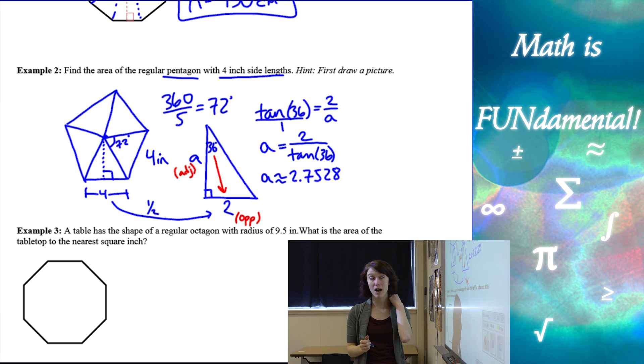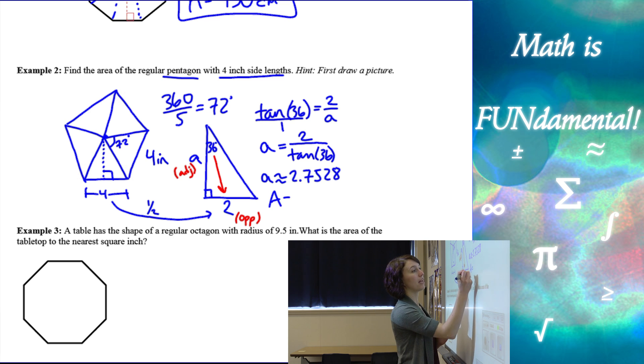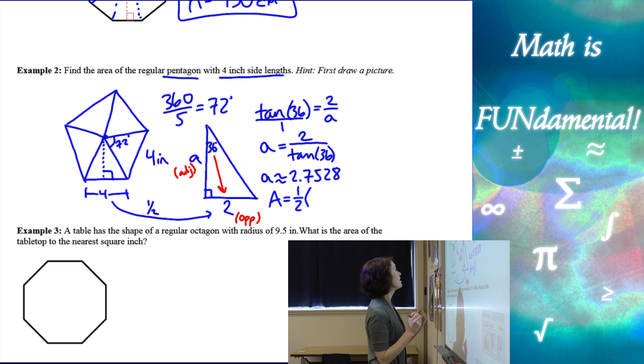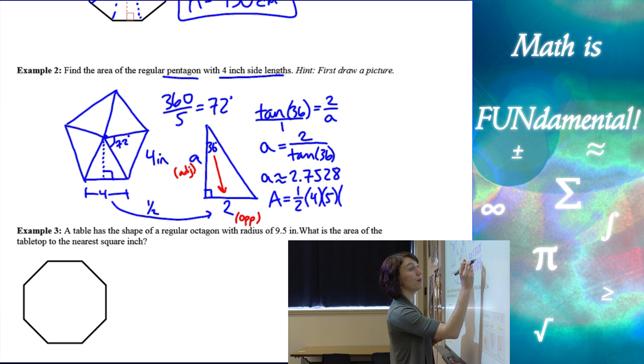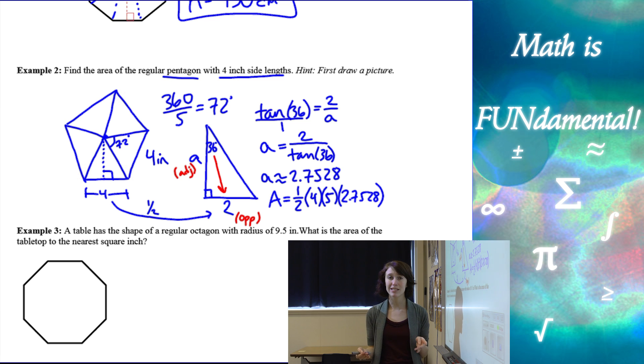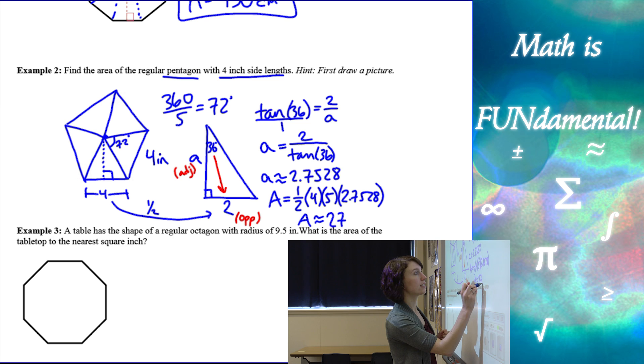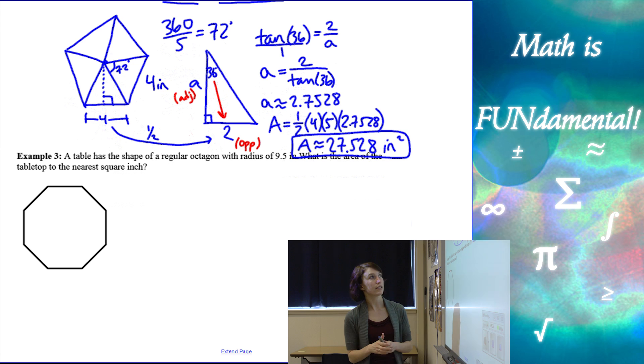Alright, so now I have my apothem. I have my side length. I can find my area. 1 half times the side length times the number of sides, so that's going to give me my perimeter all the way around, times the apothem, 2.7528. I use four decimals just so I don't end up with a rounding error. Four decimals is usually a pretty safe number. Alright, and then it doesn't tell me how much they want me to round, so I'm just going to do at least a few decimals there, and we should get 27.528. Oh, yep, that works. Alright, and then inches squared for our area units.